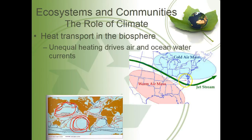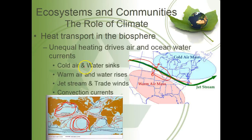Cold air masses will dive underneath warm air masses, which is why it often cools off during a storm. Storms follow right along a warm air and cold air boundary. There's a reason why Kansas is so windy — we are typically right through the main jet stream, which can dip south or pull north, but goes through here most of the time because there's a cold air mass in the north and a warm air mass in the south. Cold air and water sinks; warm air and water rises — that gives us jet streams, trade winds, and convection currents.